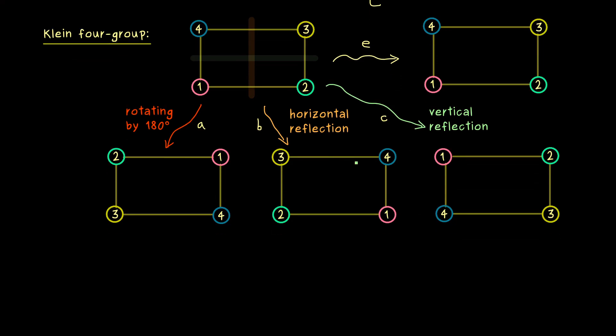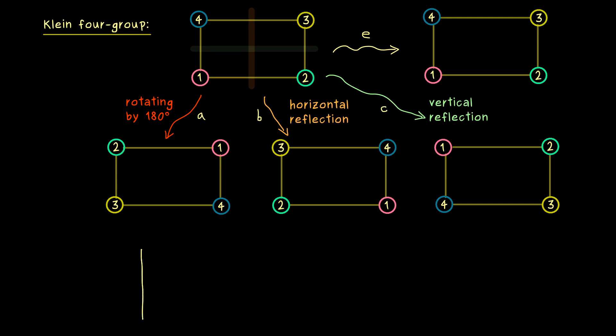Now let's put them into a table. So we want to know what happens if we combine two of them. We can write E, A, B, C on the vertical axis and the horizontal axis. Then as always, because we have the identity element E, we will not change anything in the first column and in the first row.